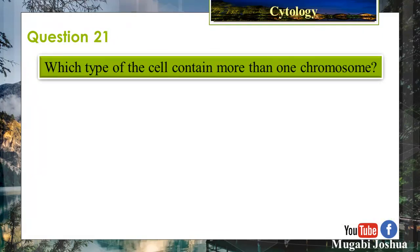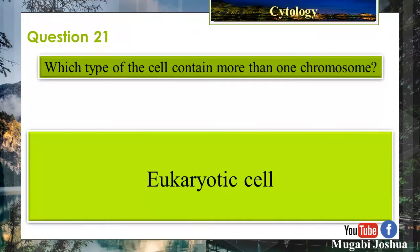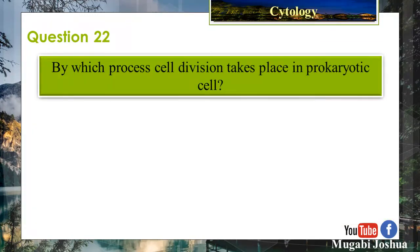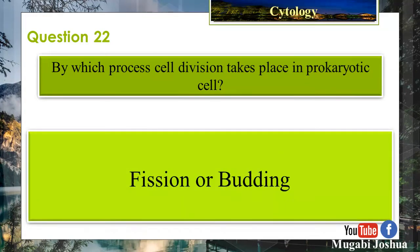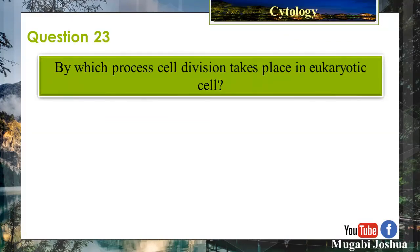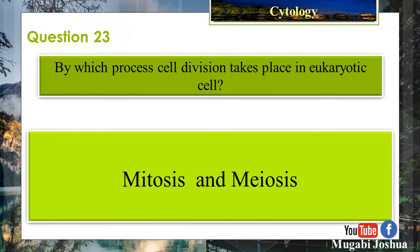Question 21: Which type of cell contains more than one chromosome? Eukaryotic cell. Question 22: By which process does cell division take place in prokaryotic cells? Fission or budding. Question 23: By which process does cell division take place in eukaryotic cells? Mitosis and meiosis.